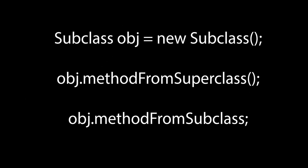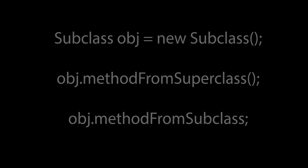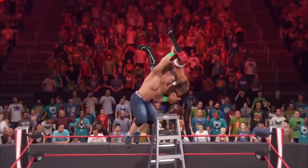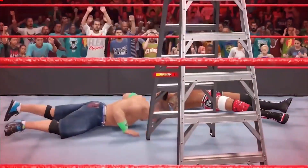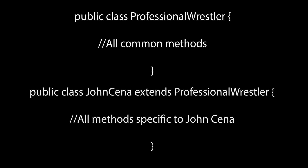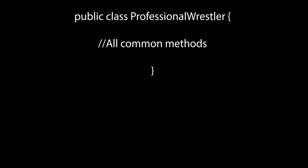This approach helps decrease the amount of repeated methods, the number of potential errors to resolve, and the time required to understand each class. When creating objects of the subclass, one can use both the methods of the subclass and superclass at the same time. Moving back to our WWE video game, we could similarly code each professional wrestler with a superclass 'professional wrestler' containing all common methods, and subclasses representing the actual wrestlers.